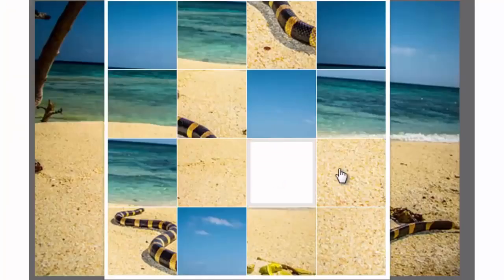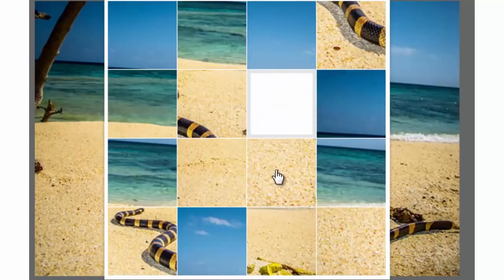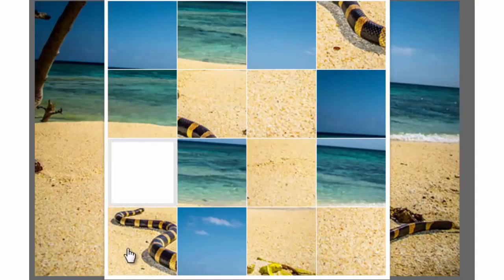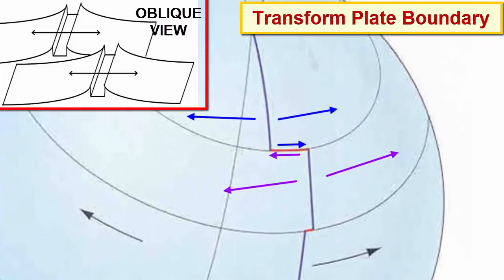That leaves one remaining plate boundary to discuss: transform, where plates slide past each other. There's no way to have plate motion moving apart and together without having some edges slide past each other. To accommodate divergent motion along ridges on a spherical surface — like seams on a baseball — the ridges break into sections, and each section is offset from the next by a transform boundary.